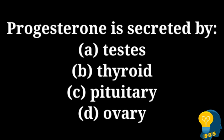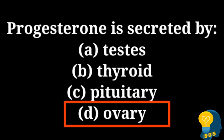The next question is: progesterone is secreted by? The options are option A: testis, option B: thyroid, option C: pituitary, and option D: ovary. The correct answer is option D: ovary. Testis secretes testosterone, thyroid secretes thyroxin, pituitary gland secretes growth hormone, but ovary, which is found in females, secretes the hormone called progesterone.